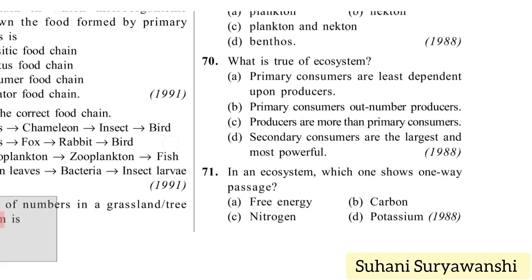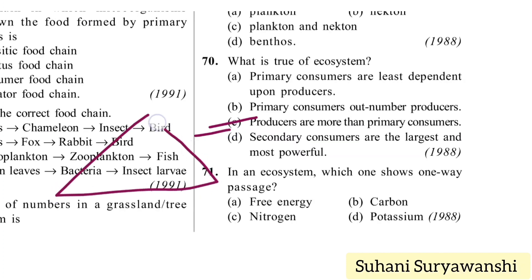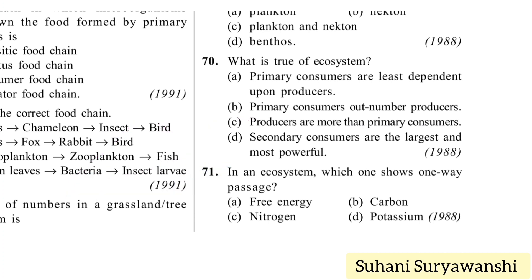What is true about the ecosystem? Primary consumers are least dependent upon producers — incorrect. Primary consumers outnumber producers — incorrect. Producers are more than primary consumers because the pyramid is upright and producers are at the bottom level with more numbers. So option C is the right answer.